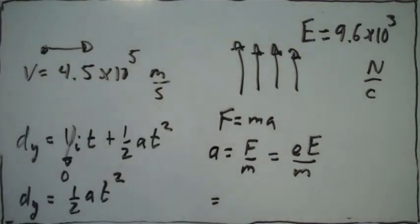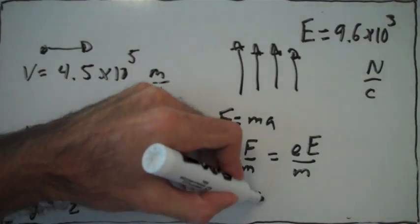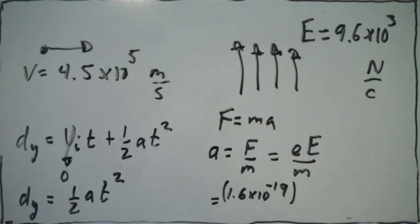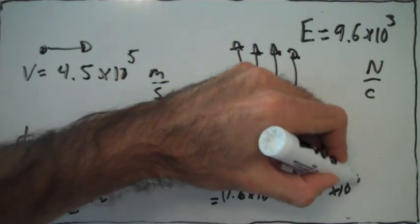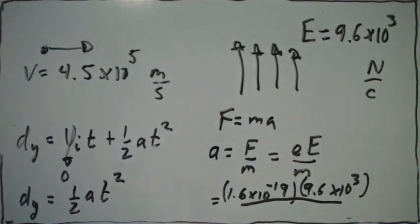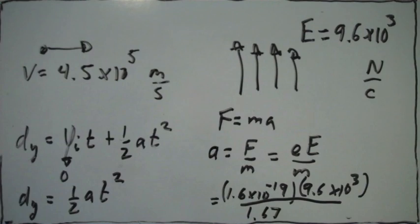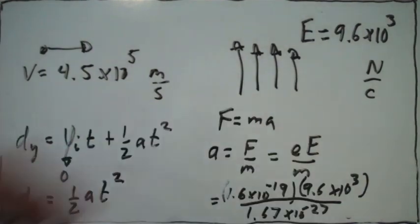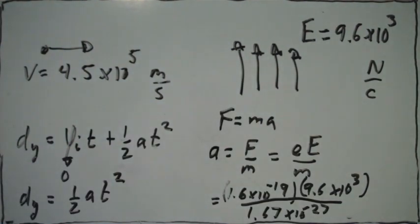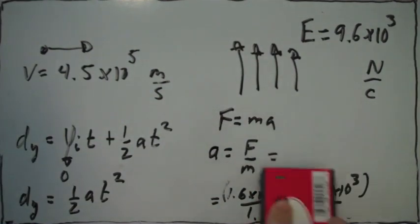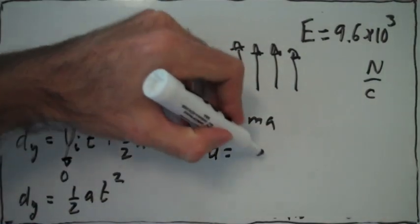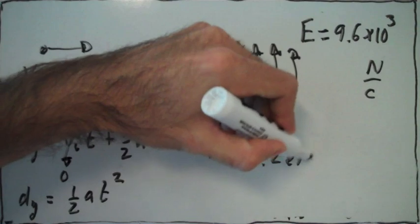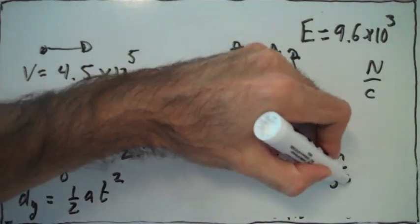So we can plug in these numbers — we know the charge of the proton, we know the strength of the electric field that it feels, and we know the mass of the proton. So we can calculate the acceleration of the proton in the y direction. Calculating this out gives us this result — that's the acceleration of the proton in the y direction.